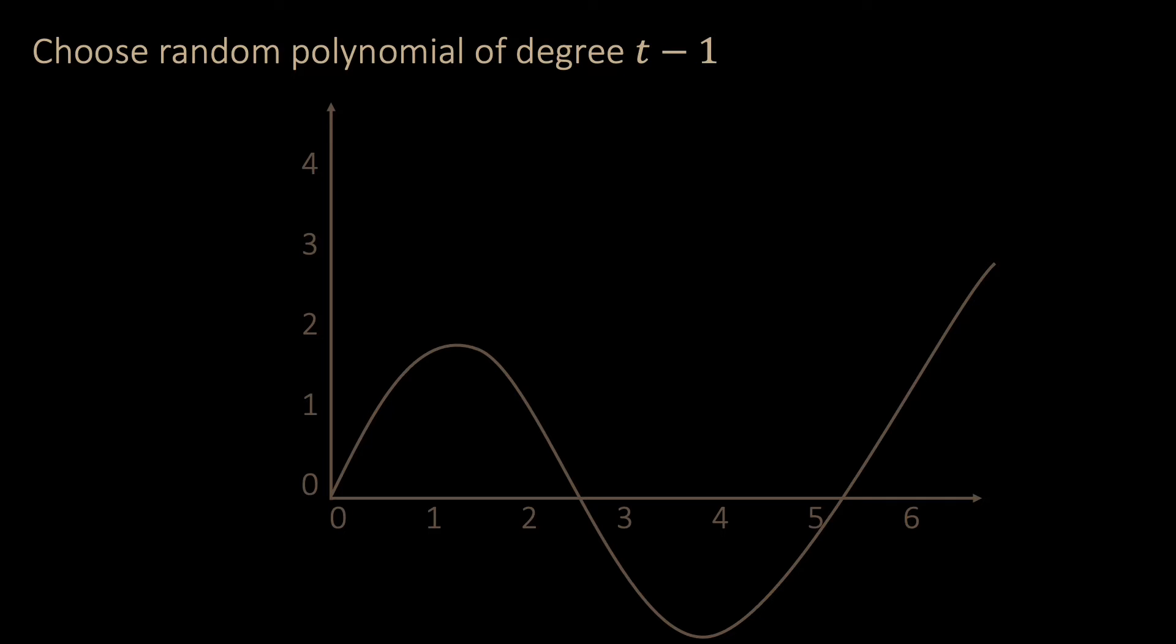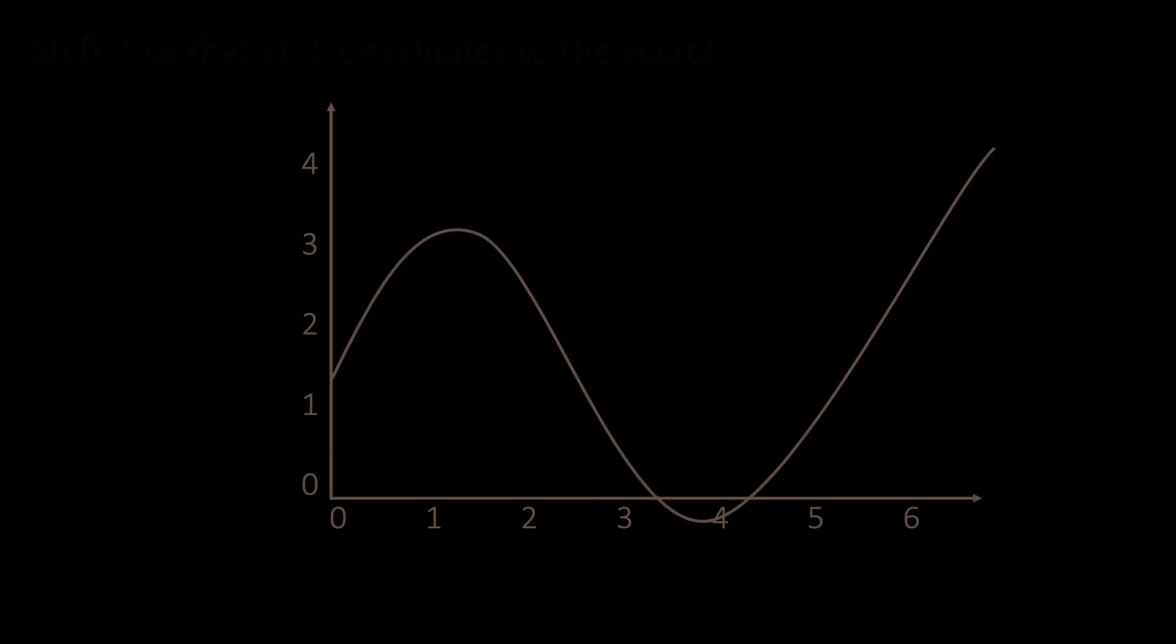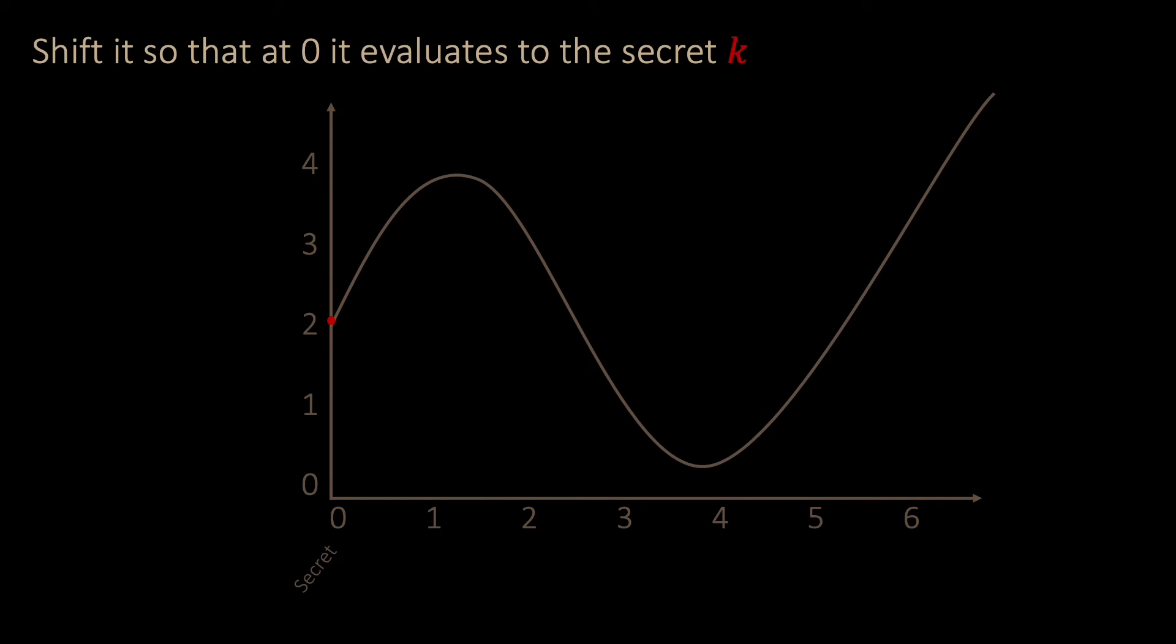Such a reconstruction can be done, for example using Newtonian interpolation. Once we have the random polynomial, we shift the polynomial such that the evaluation value at 0 is our secret value. Here, for example, the secret value is 2.